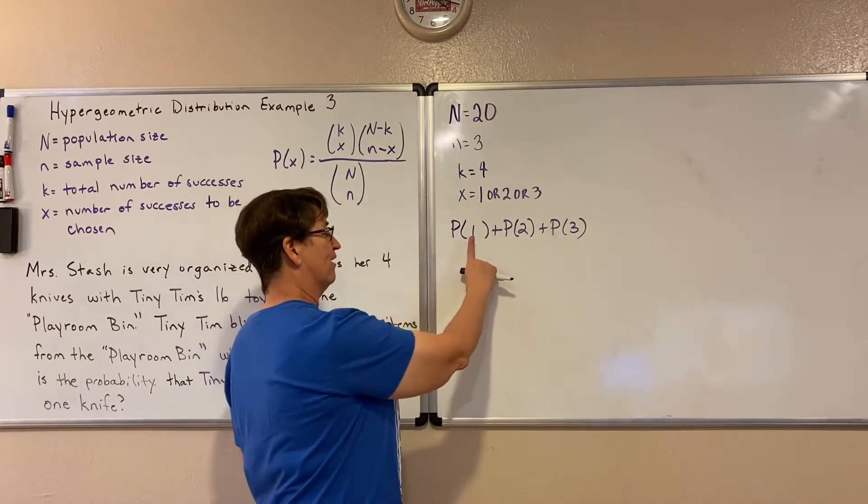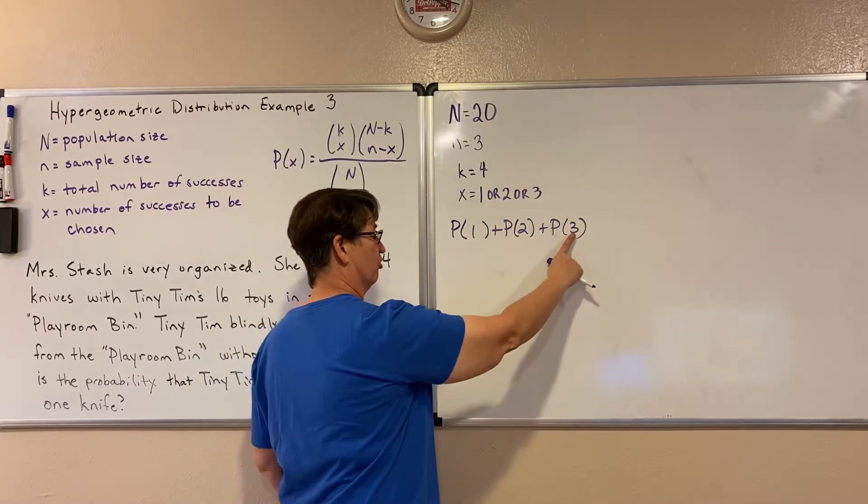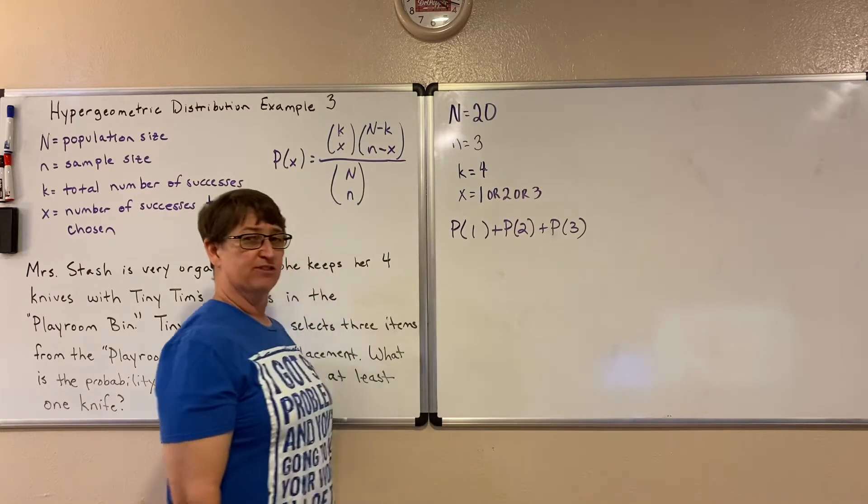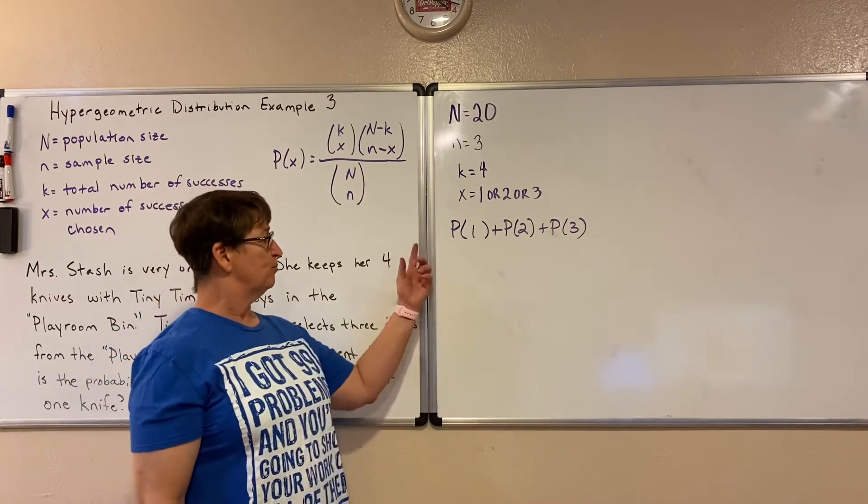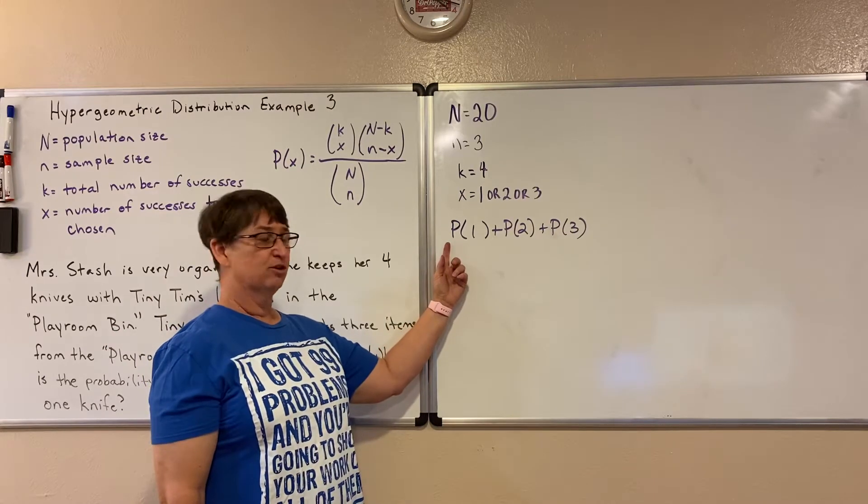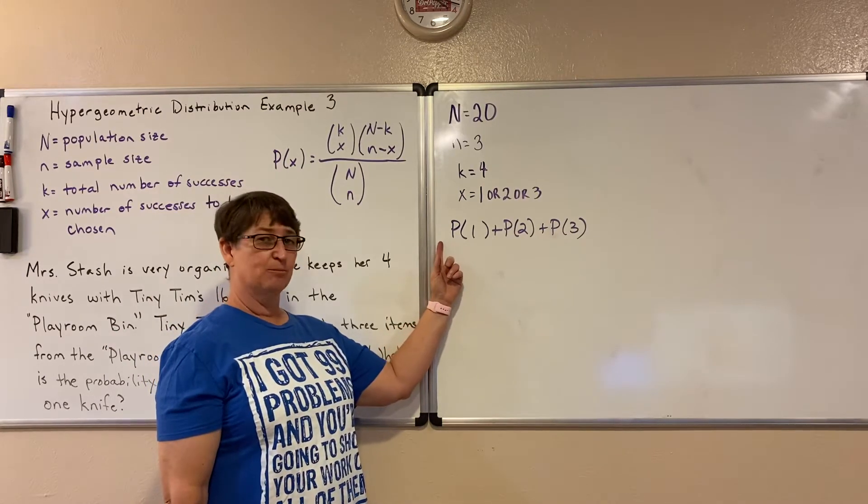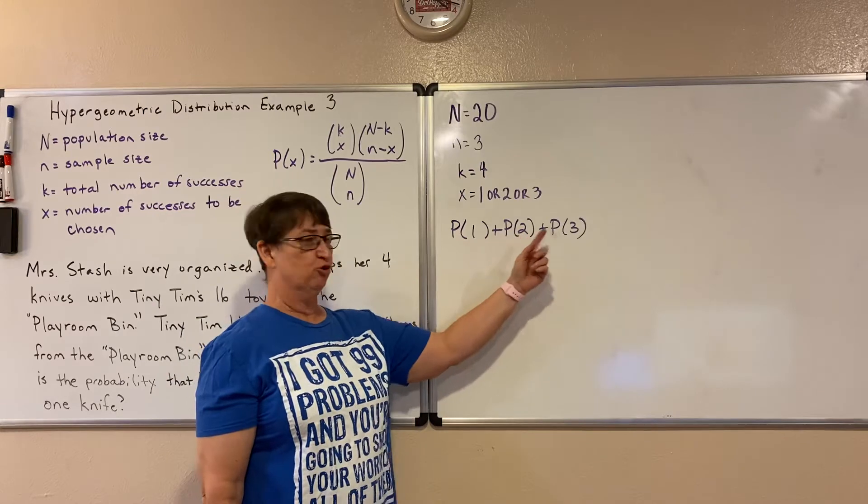Could I use the complement? Well, here we have one, two, or three. What else is in the set of how many knives he could pull out? Well, he could pull out zero knives. So zero is the complement of one, two, and three.